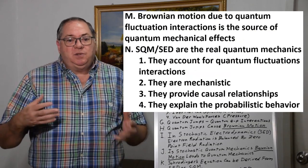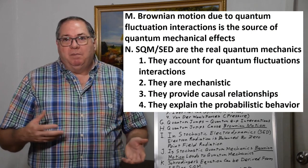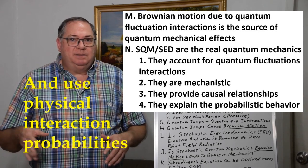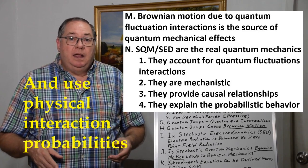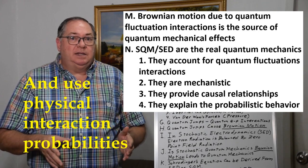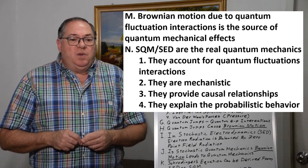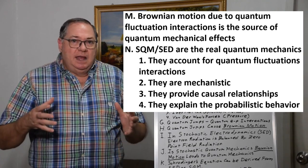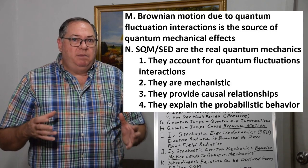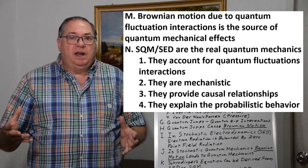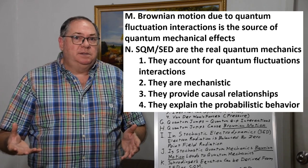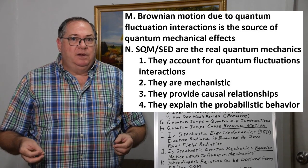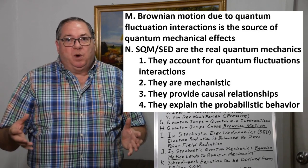In short, that's what's really going on and where quantum mechanics really comes from. We can do away with the non-mechanistic probabilistic nonsense of 'we don't understand what's going on,' because we really can relate it back to the zero point field. Stochastic quantum mechanics and stochastic electrodynamics together give us a complete picture of how quantum electrodynamics really happens.